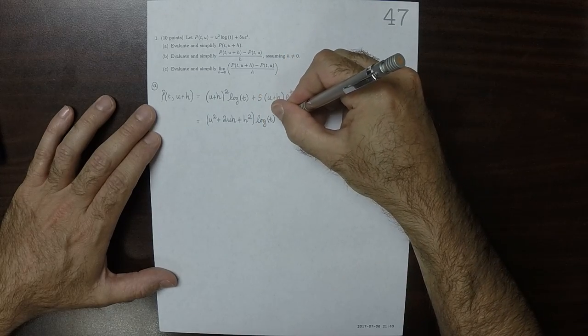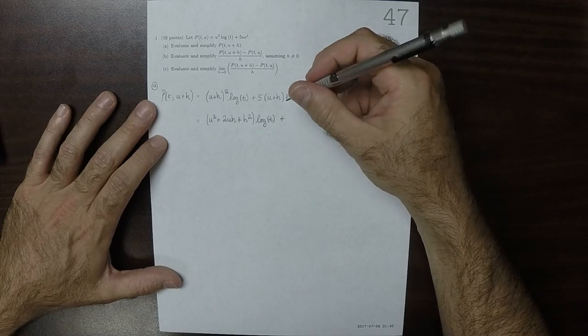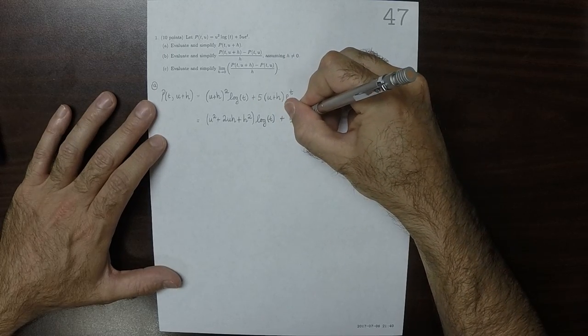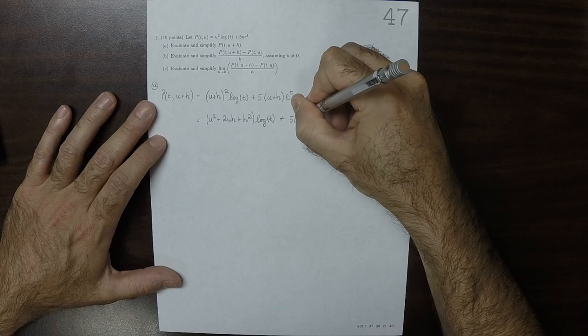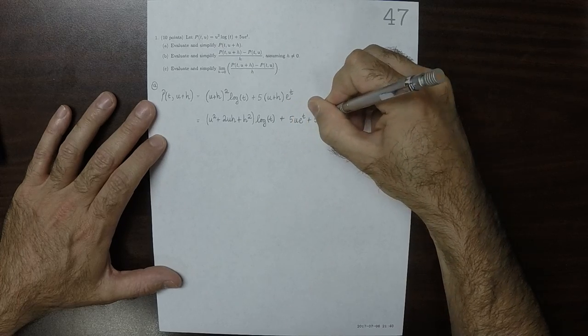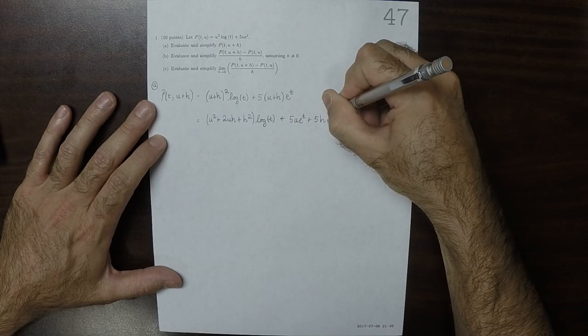And then plus 5u exponential of t plus 5h exponential of t.